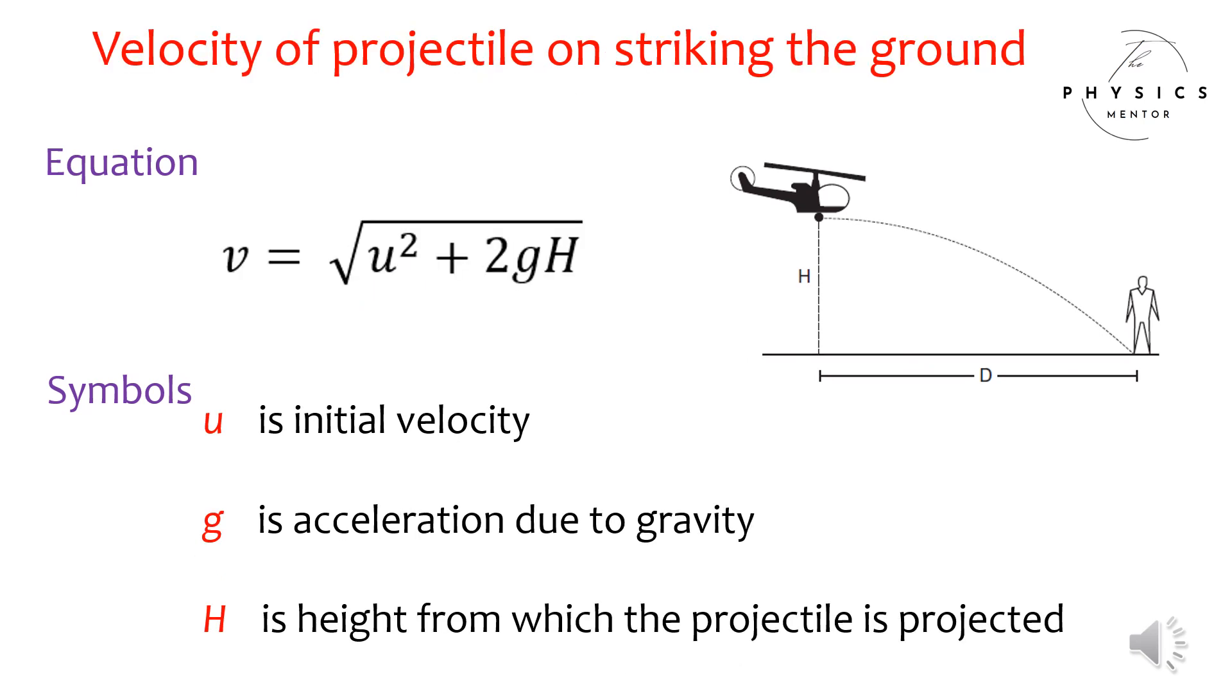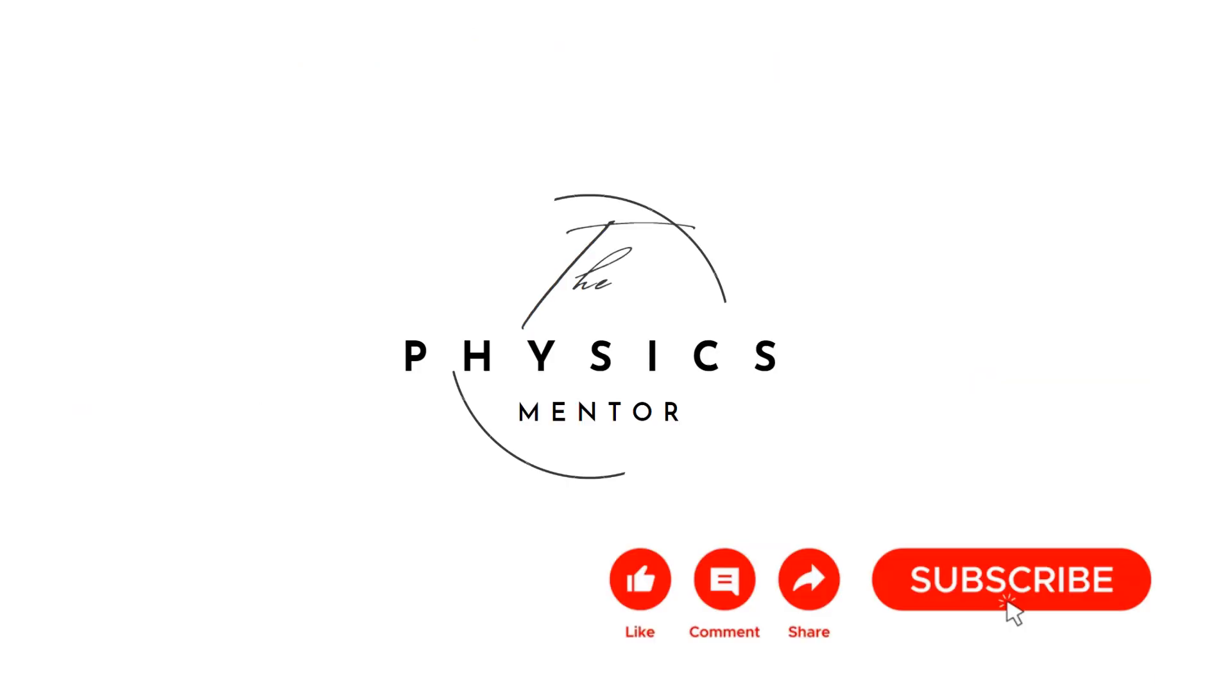Velocity of projectile on striking the ground: Equation - Velocity equals square root of u squared plus 2gH. Symbols: u is initial velocity, g is acceleration due to gravity, H is height from which the projectile is projected.